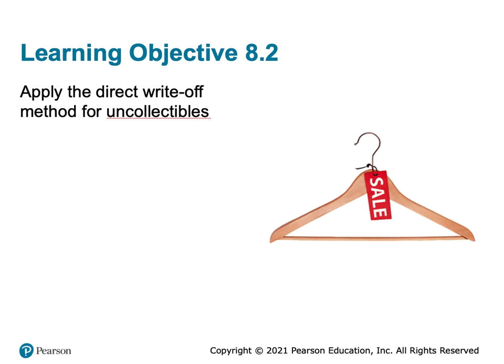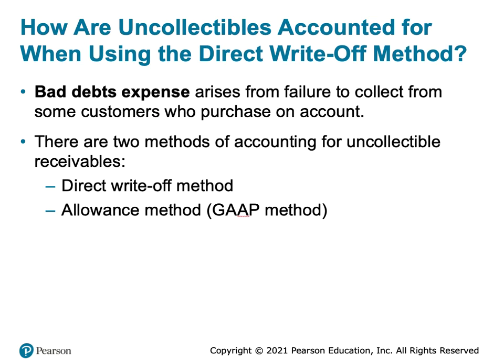We're going to look at how we deal with uncollectibles. Specifically, we'll use the direct write-off method, and then in the next video we'll look at the allowance methods. So how do we deal with uncollectible accounts when using the direct write-off method?